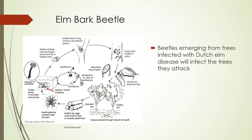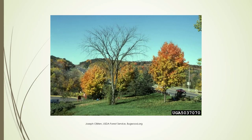Beetles that emerge from trees infected with Dutch elm disease will infect the trees they attack. They carry the spores and fly to healthy trees, feeding in twig crotches and depositing the spores. They are attracted when a tree has been wounded, so it's really important that if you're going to prune your elms, you do not do it when these beetles are active, because they will be attracted to your trees. Unfortunately, this is what trees look like when they've died from Dutch elm disease.